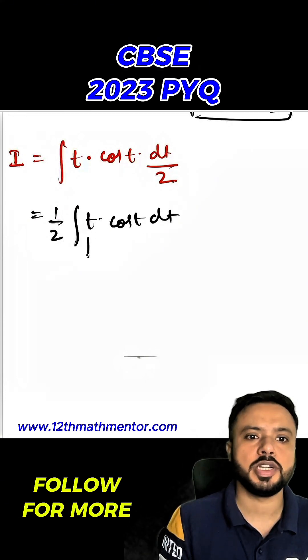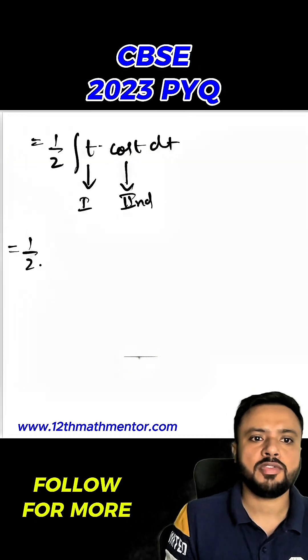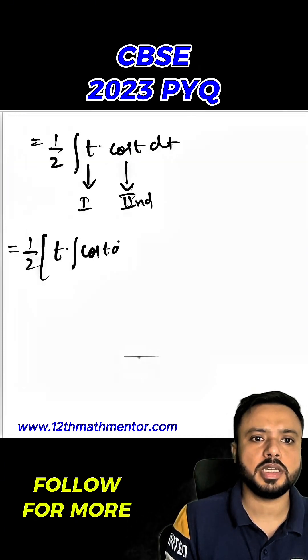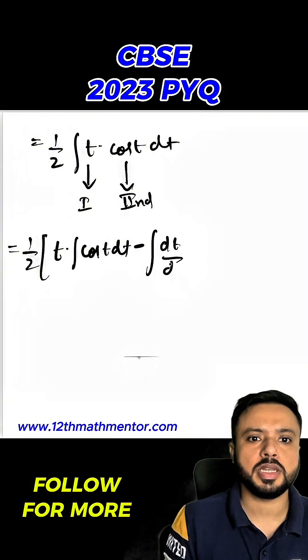Now I'm going to use integration by parts. In integration by parts, t is going to be my first function, cos t is my second function. So 1/2 times t times integral of cos t dt, minus integral of dt upon dt times integral of cos t dt, the whole thing dt.